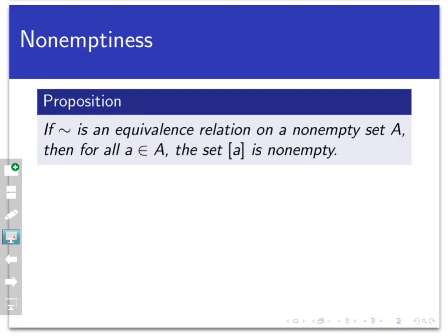Let's start with something easy. The first proposition says that if tilde is an equivalence relation on a non-empty set A, then for every a in capital A, the equivalence class of a is non-empty. In other words, there's no such thing as an empty equivalence class — all equivalence classes contain something. This is so easy that I'm going to prove it right below the proposition statement.